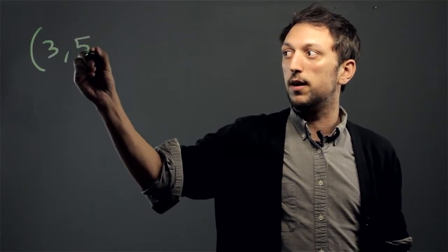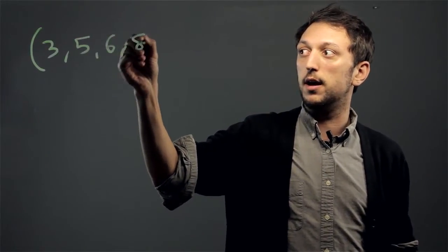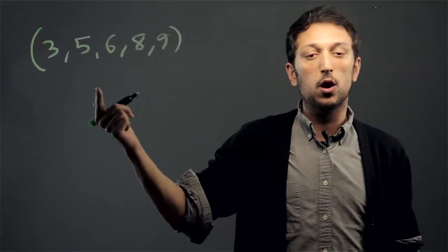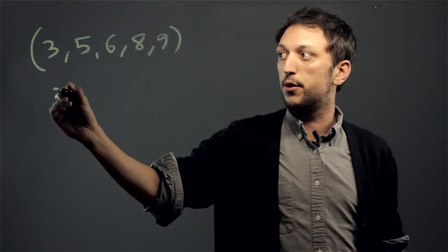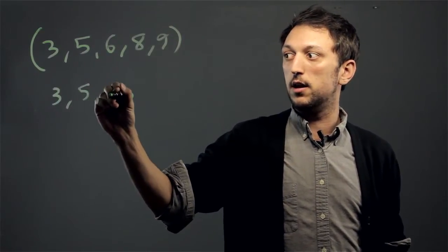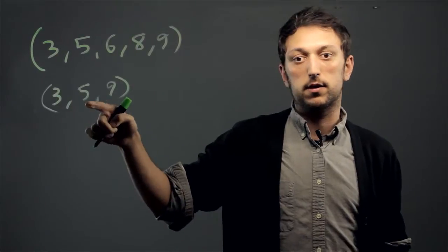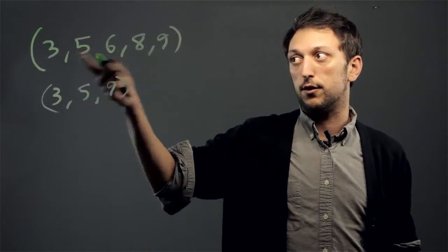For example, if we had a set of 3, 5, 6, 8, and 9, we could make the subset 3, 5, 9, and this would be the subset of all odd integers from this set.